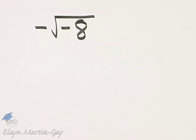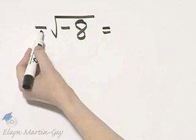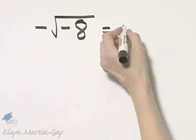Let's simplify and write in the form a plus bi, and let's first simplify this. I'm just going to rewrite this negative sign,